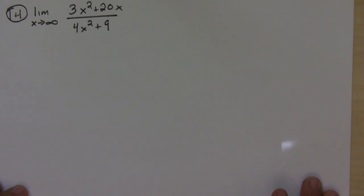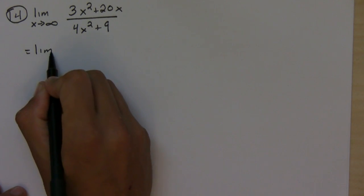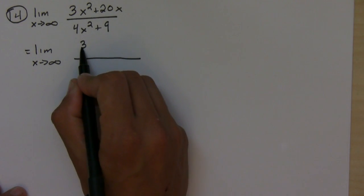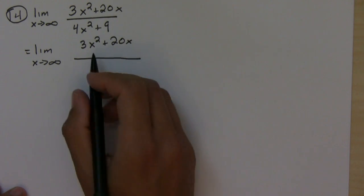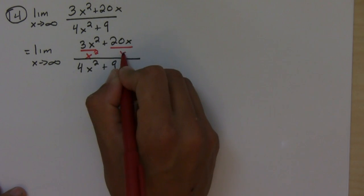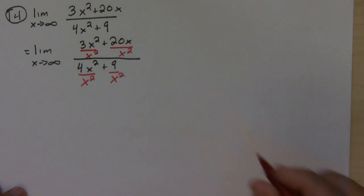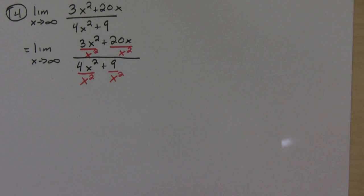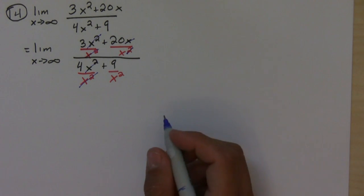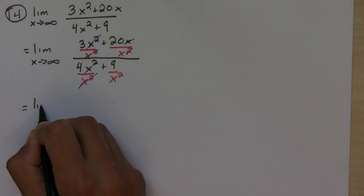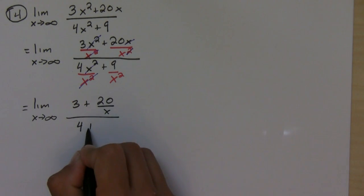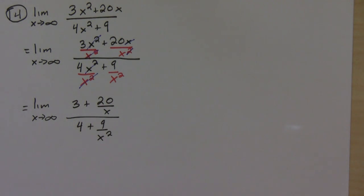We're going to approach this problem how we usually approach infinite limit problems. We look for the highest power — here the highest power is 2 — so we're going to divide the numerator and denominator by x to the highest power, which is x squared. After simplifying, this x cancels with one of these, and both x squareds cancel. Rewriting gives the limit as x goes to infinity of (3 + 20/x) over (4 + 9/x²).